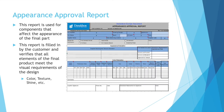The appearance approval report is used for components that affect the appearance of the final part. This report is filled in by the customer and verifies that all elements of the final product meet the visual requirements of the design — things like whether the color, texture, and shine are correct. You can see in the Donaldson example that it can get very technical for how things look visually.